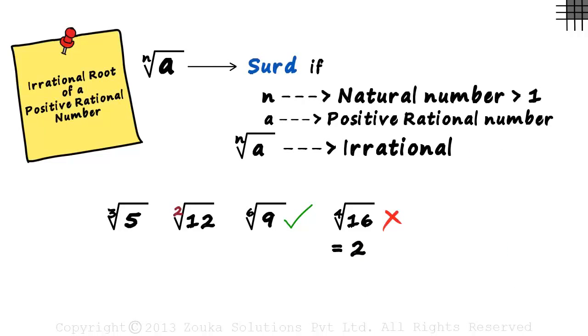There is another important thing we need to know about SIRDs. SIRDs with order equal to 2 are given a special name. They are called quadratic SIRDs.